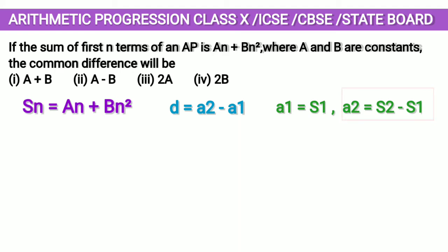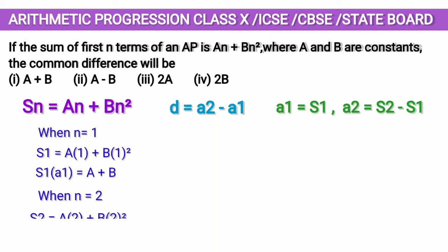Let us find s1 and s2 by substituting n = 1 and 2 in the Sn formula. When n = 1, we get s1 or a1 = a + b. And when we substitute n = 2, we get s2 = 2a + 4b. We have a1 now. Now to find a2, we have to do s2 - s1.